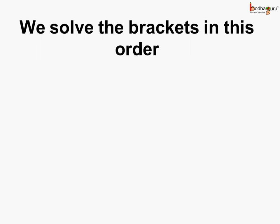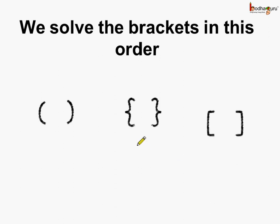Which is the order in which brackets should be solved? The round bracket should be solved first, followed by curly brackets, and then followed by square brackets. So this is the order of priority in which these brackets should be solved.